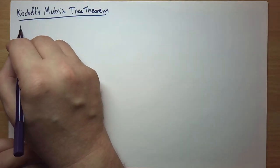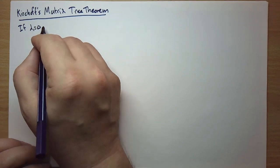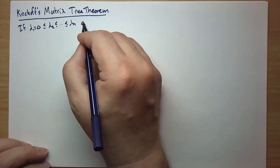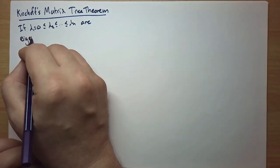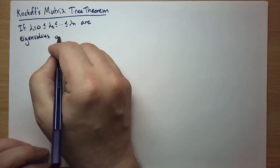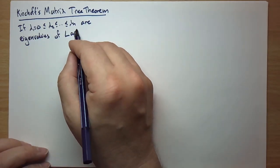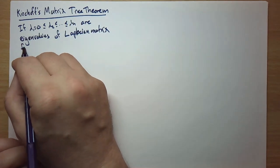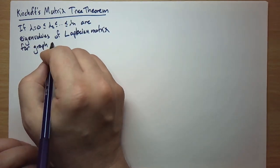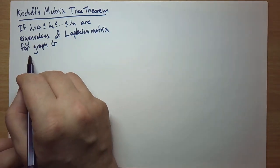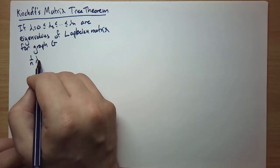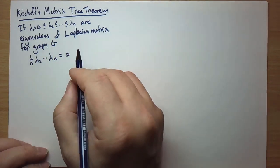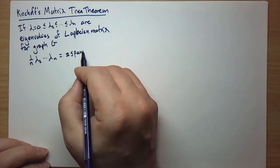If our eigenvalues are lambda_1 = 0 ≤ lambda_2 ≤ ... ≤ lambda_n, the eigenvalues of our Laplacian matrix for graph G, then the conclusion is that (1/n) times the product of everything other than the trivial eigenvalue of 0 equals the number of spanning trees of G.